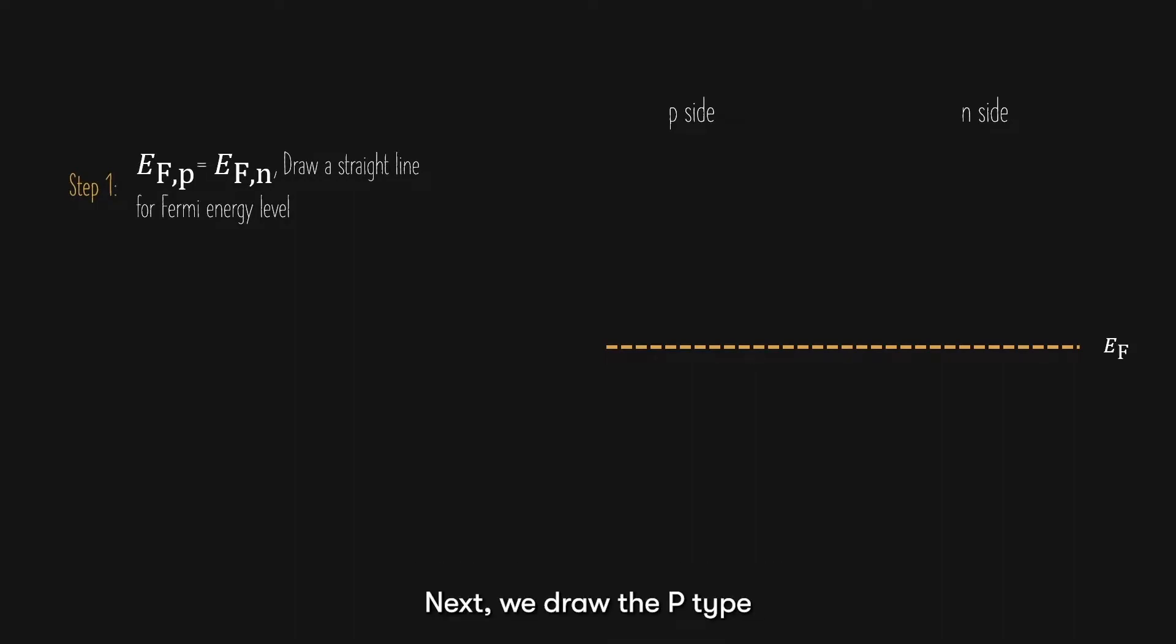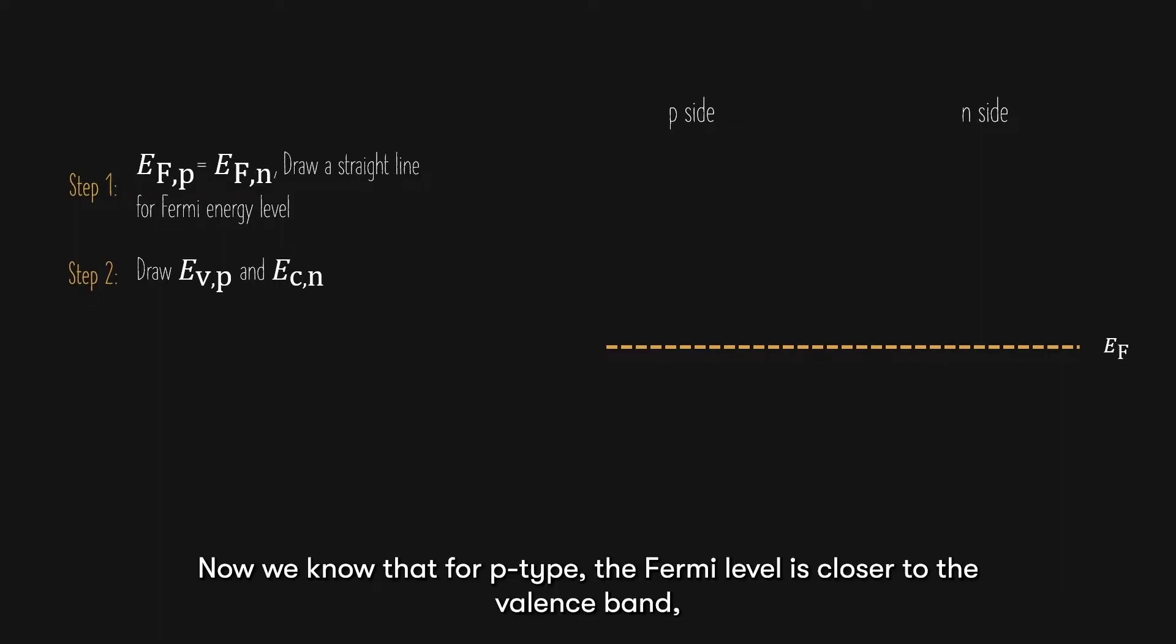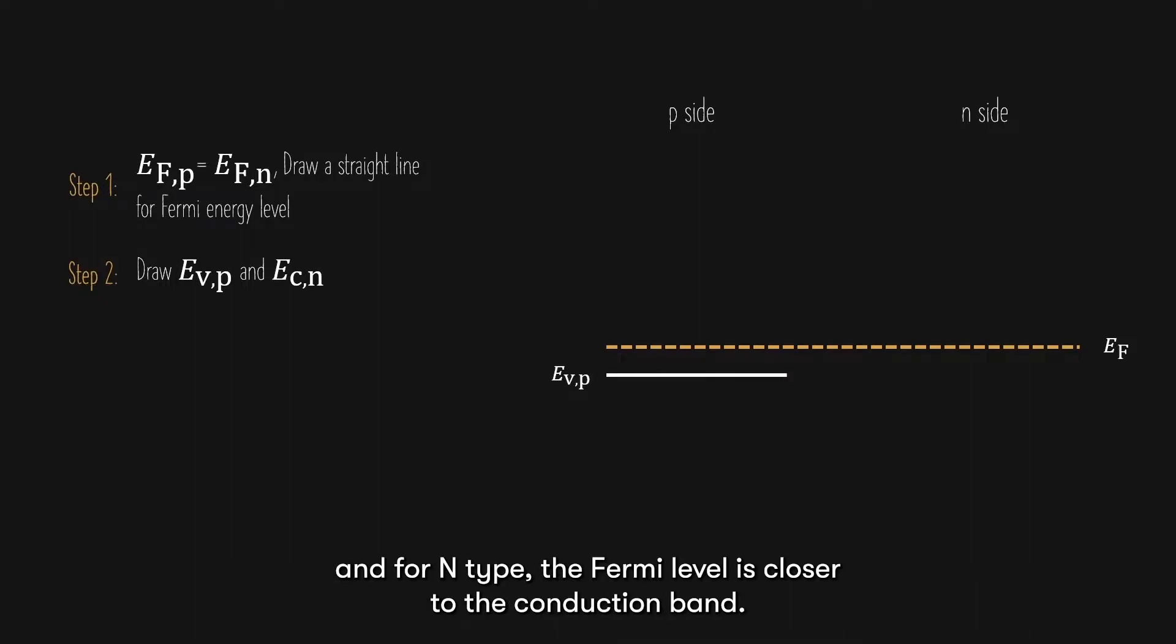Next, we draw the p-type valence band and n-type conduction band. Now, we know that for p-type, the Fermi level is closer to the valence band, and for n-type, the Fermi level is closer to the conduction band.